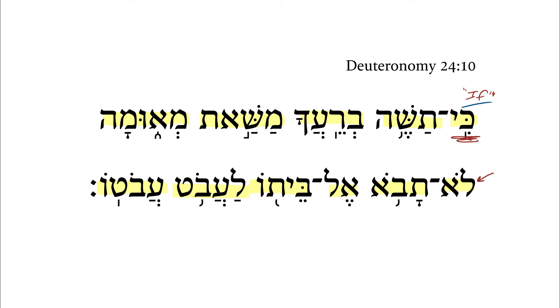So we might think: here's the 'if,' and then we get 'then.' We don't have an actual 'then' here, but logically that's what's going on. The verb that we have here at the beginning, 'tashe,' is interesting.